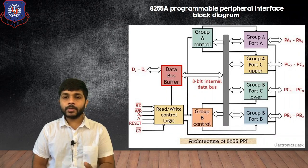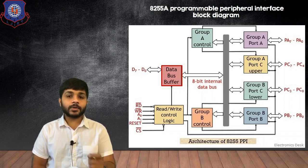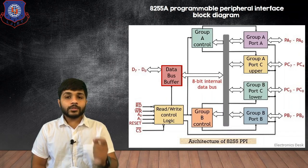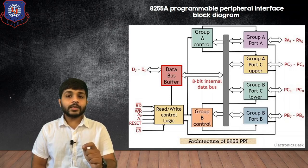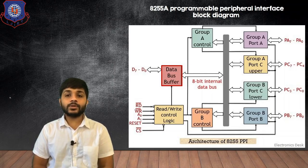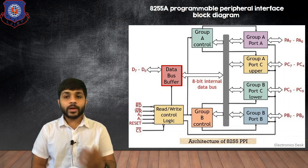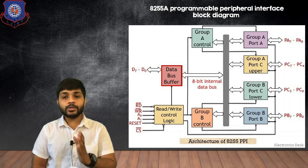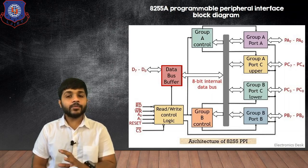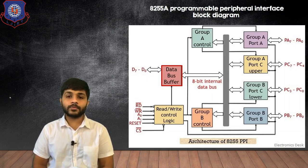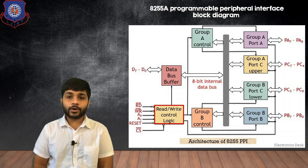Let's see the block diagram of the 8255A. The first block you are seeing is the data bus buffer. Using this block, the microprocessor can send and receive data. This block is connected to the microprocessor via the data bus D0 to D7. When the microprocessor sends any data, the 8255A will receive it using this data bus buffer. When the microprocessor is reading any data, the 8255A will send data using this data bus buffer.